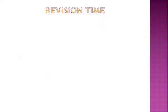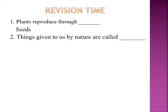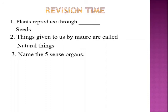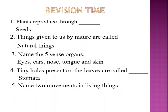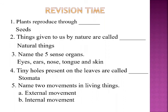Now let us have a small revision. First question: plants reproduce through seeds. Second question: things given to us by nature are called natural things. Third question: name the five sense organs — eyes, ears, nose, tongue and skin are our sense organs. Next question: tiny holes present on the leaves are called stomata. Last question: name two movements in living things — external movement and internal movement. Hope you all enjoyed the session. Thank you.